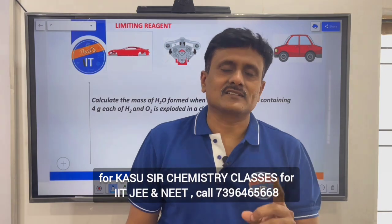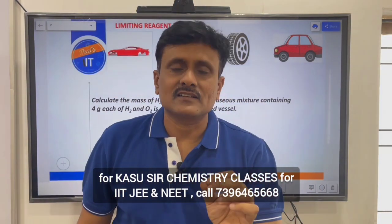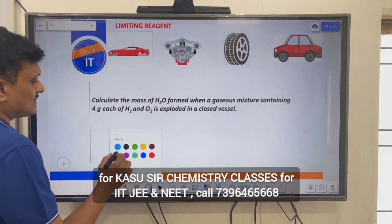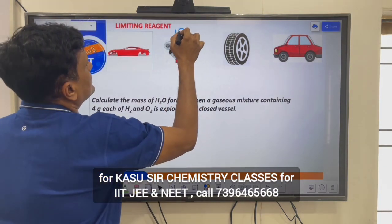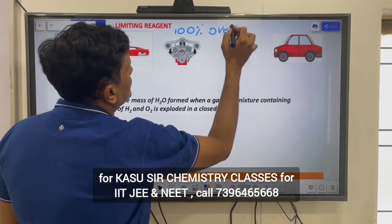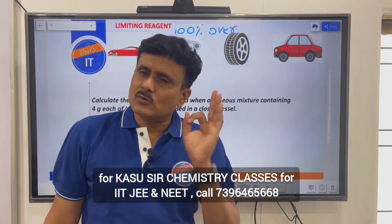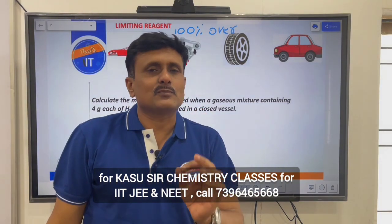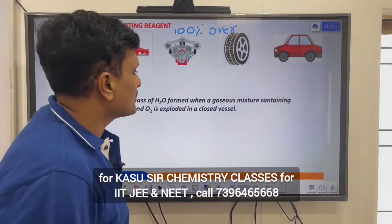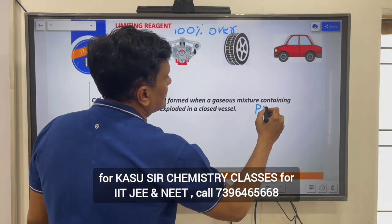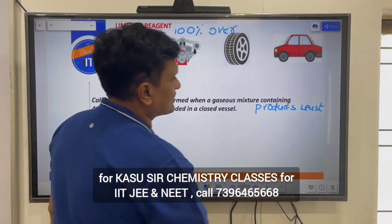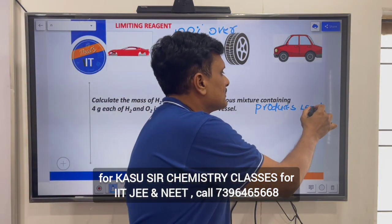First of all, its definition. Limiting reagent is the reactant that is fully consumed during the course of reaction. Limiting reagent is 100% consumed — 100% over. At the end of the reaction you could anticipate the limiting reagent to fully finish. One more definition, this is very important: limiting reagent produces the least amount of product. Remember this second point — limiting reagent produces the least amount of product.